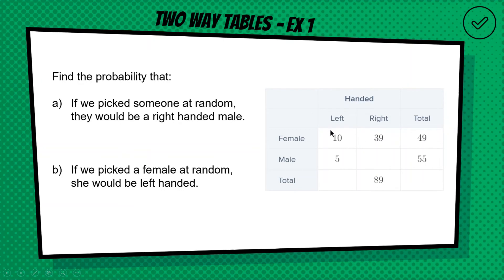All right, for an example we have a two-way table looking at male and female and left or right handed. Okay, so we've got 10 females who are left-handed, we've got five males who are left-handed. Okay, so find the probability that if we pick someone at random, they would be a right-handed male.